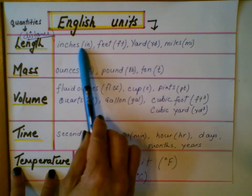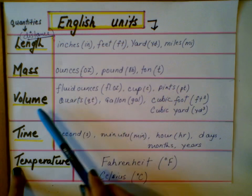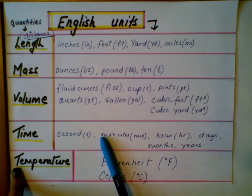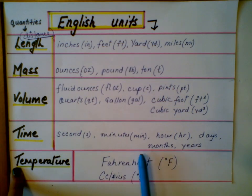For the quantity distance, you can use any one of these units. For mass, any one of them. Volume, these. Time, these. Temperature, this one. Now let's go to the metric units.